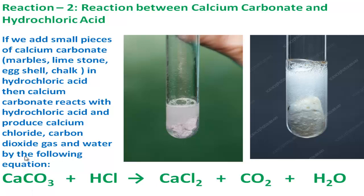This is the reaction in language, and this is the equation — the short expression using formulas. Calcium carbonate reacts with hydrochloric acid to produce calcium chloride, carbon dioxide gas, and water. Write the reaction first, then write the equation. The carbon dioxide gas bubbles escape because the mouth of the test tube is open, so after some time only calcium chloride and water remain inside the test tube.